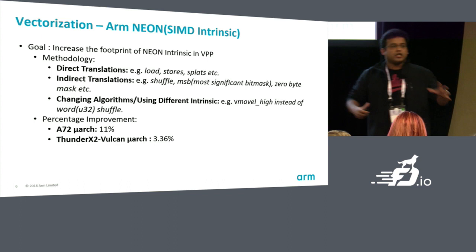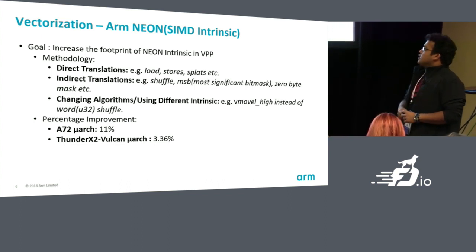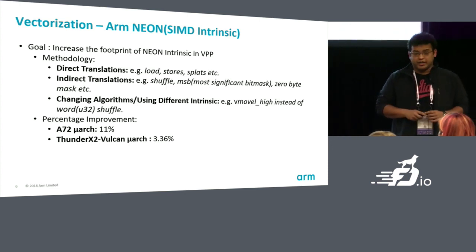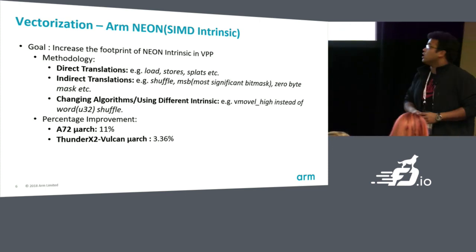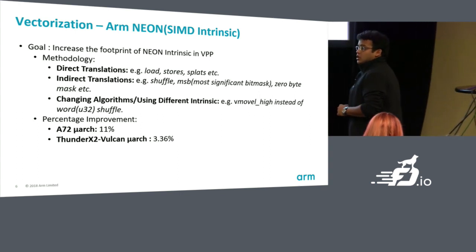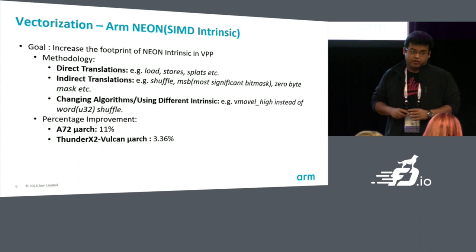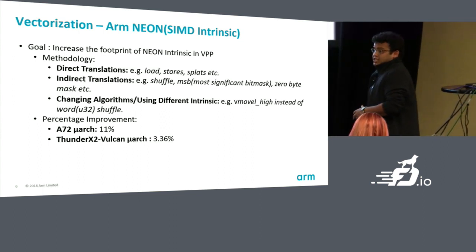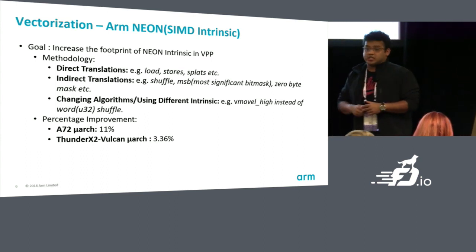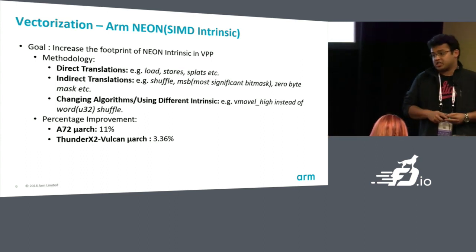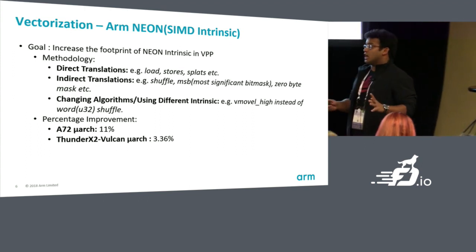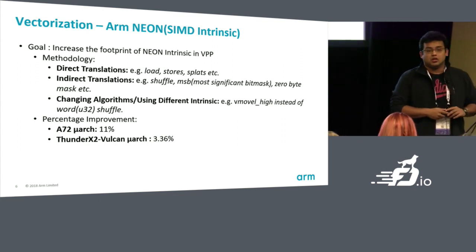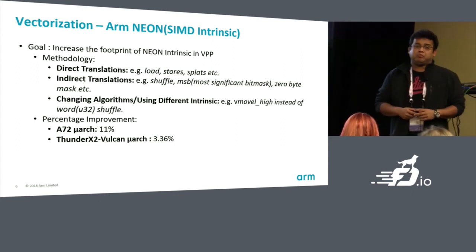With our journey of doing all this vectorization work, we calculated a performance improvement of 11% on an A72 core, and on the Thunder X2 Vulcan core, we saw an improvement of 3.36%. There's a lot more to do — this is just the IPv4 forwarding path, where we translated existing SIMD to a Neon-based solution. We plan to investigate more.